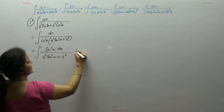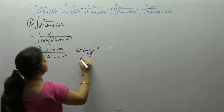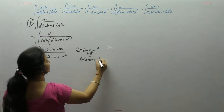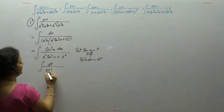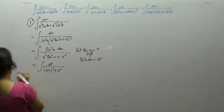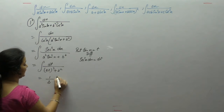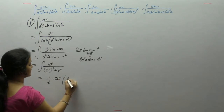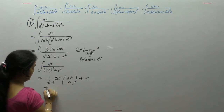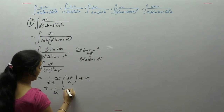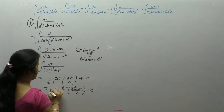Now put tan x as t. The derivative of tan is sec²x, giving dt. The integral becomes 1 upon (at)² plus b², and using the formula: integral of 1 upon x² plus a² equals 1 upon a tan inverse x upon a, the answer is 1 upon ab tan inverse (a tan x upon b) plus c.